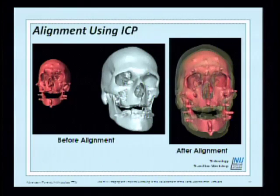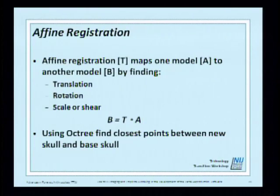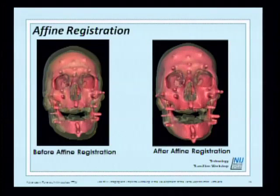After rigid alignment, the two skulls are still not identical because they come from two different people. So you use affine registration, which applies translation, rotation, and shear — also used in Procrustes analysis. You want to make sure they're in the same space before allowing the relaxation step. Using OC3 to find the closest points between the new skull and base skull, this is the result before and after affine registration.